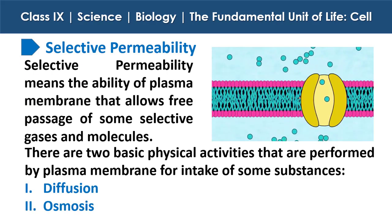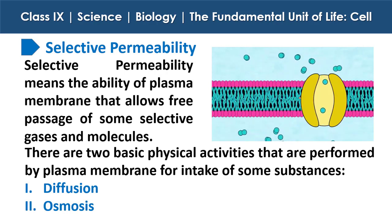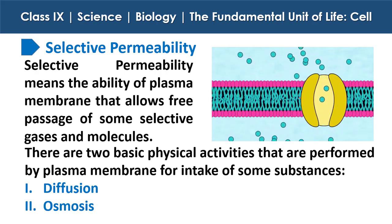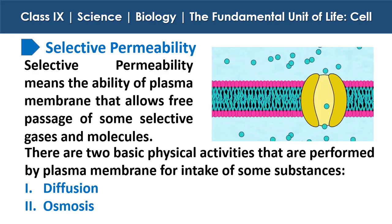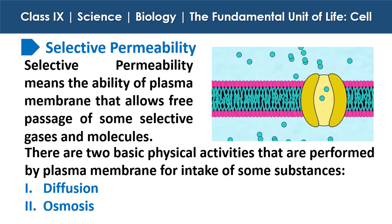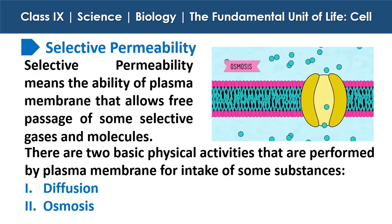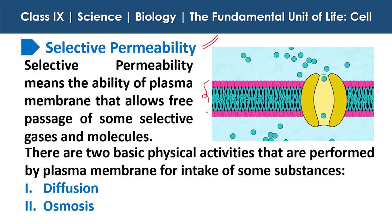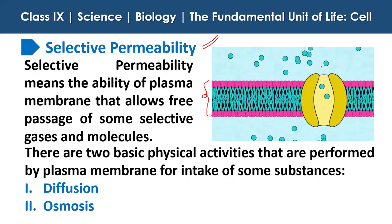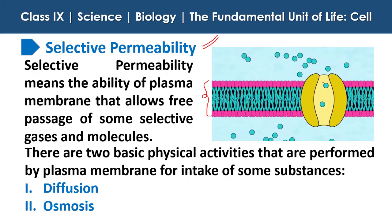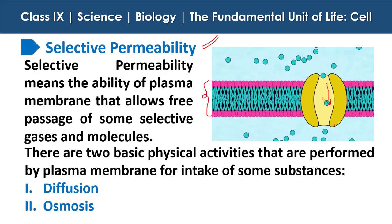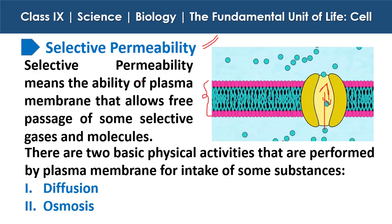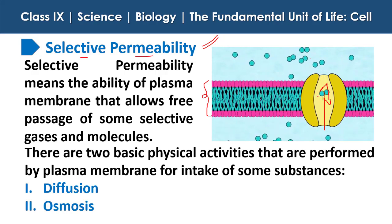Now we will study about the selective permeability of the plasma membrane. Selective permeability means the ability of the plasma membrane that allows free passage of some selective gases and molecules. As you can see here, the plasma membrane is allowing only selective molecules — not all molecules, but only some selective molecules — to move inward and only some selective molecules to move outward of the cell.